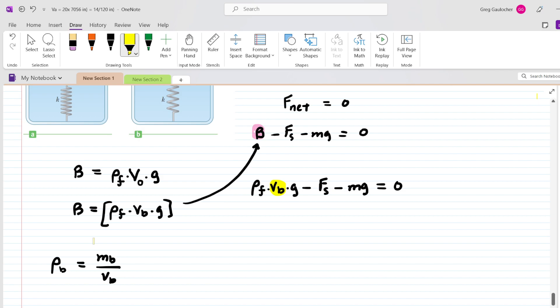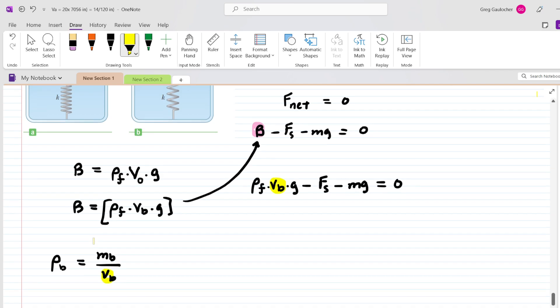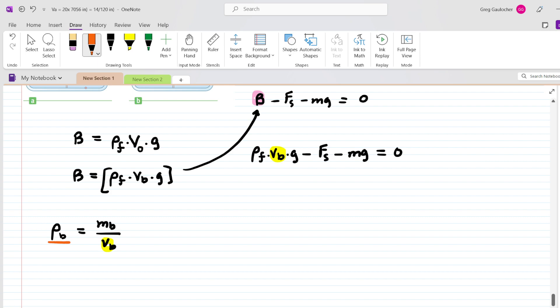And again, we're trying to create an expression for the volume of the block. And to do that, we could slip a 1 underneath the density and do a little cross-multiplication. So if we multiply in this direction, we would have the density of the block multiplied by the volume of the block. And then if we cross-multiply in the other direction, we would have the mass of the block.